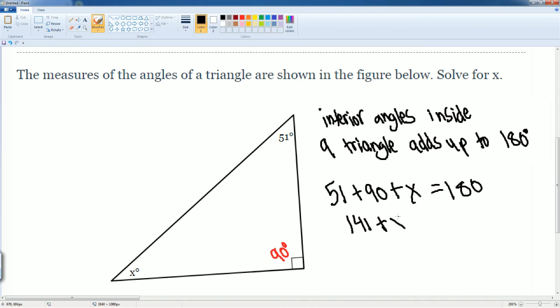Then we subtract 141 from both sides. As a result, this cancels to zero, and you get X equals 180 minus 141, which equals 39.